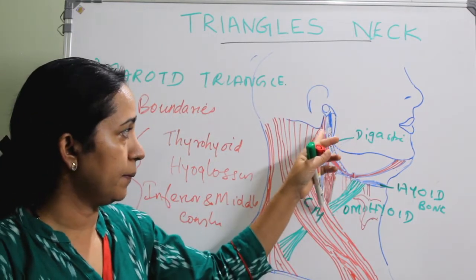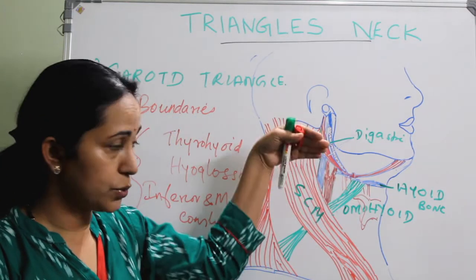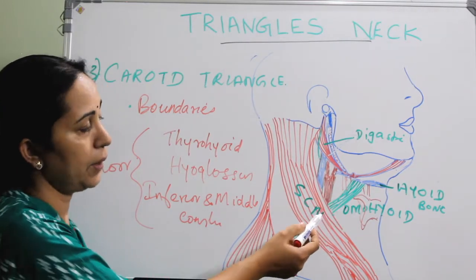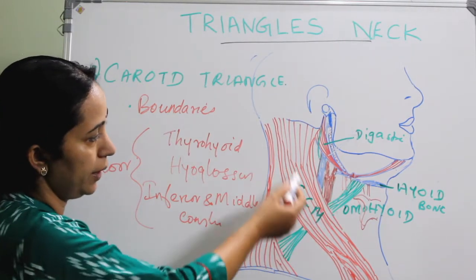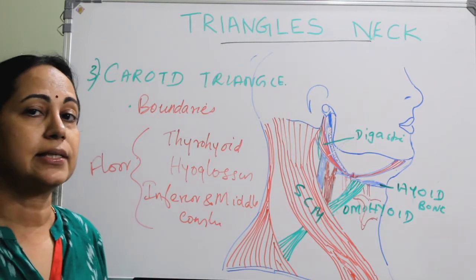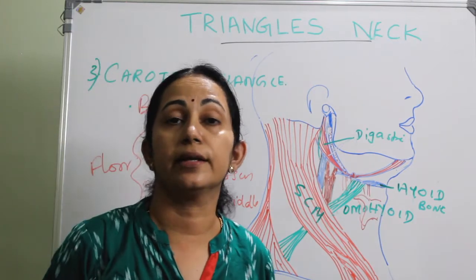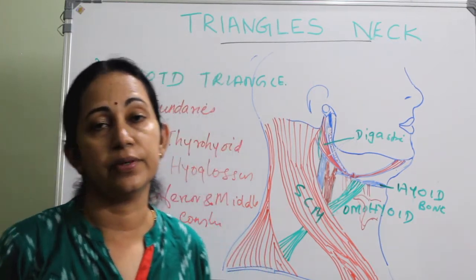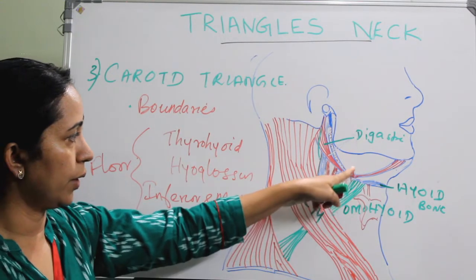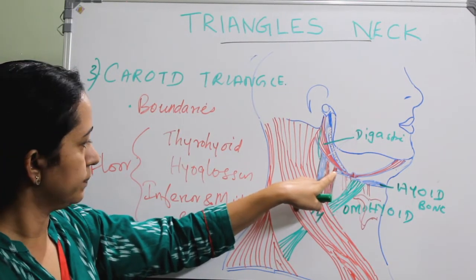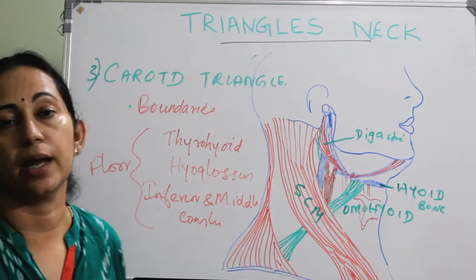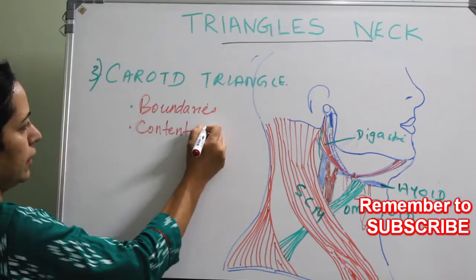So to summarize the boundaries: superiorly by the posterior belly of digastric, anteroinferiorly by the omohyoid, and posteriorly by the sternocleidomastoid. Laterally, the skin, subcutaneous tissue, and the investing layer of deep fascia. The floor is formed by the thyrohyoid, hyoglossus, and the inferior and middle pharyngeal constrictors.